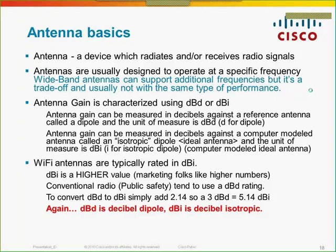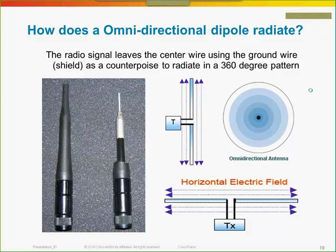dBd — decibel over dipole — was the standard for measuring antennas years ago. When Aironet started making antennas around 1993 to 1995, antennas had dBd ratings. We sold a 3 dBd dipole antenna. Since dBi is a computer-modeled gain and a higher number, you simply add 2.14 to a 3 dBd antenna to get 5.14 dBi — which folks rounded up to 5.2. This caused marketing pain because we were selling 3 dBd antennas while competitors sold 5.2 dBi. Marketing-wise, dBi won out — that's the standard now.